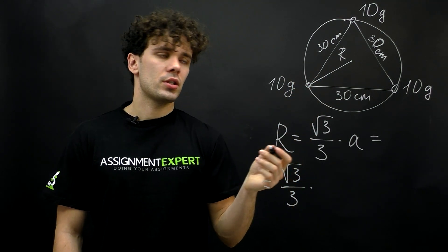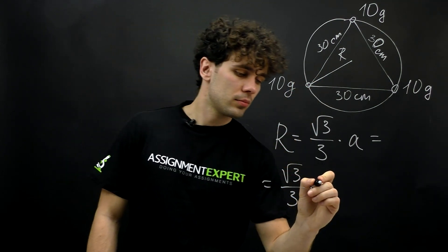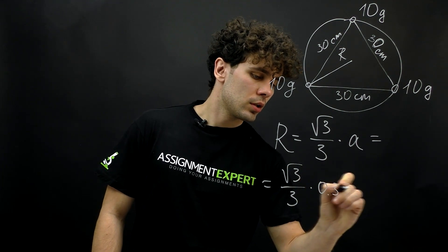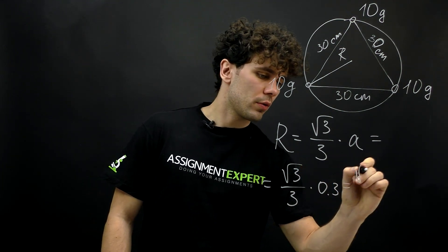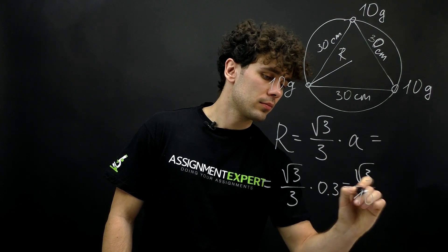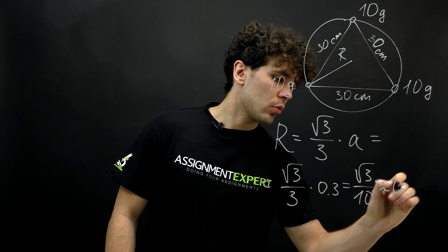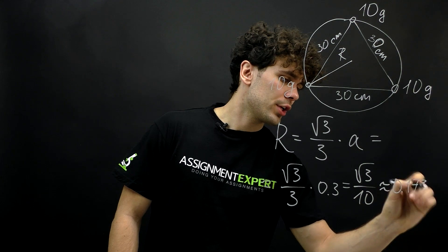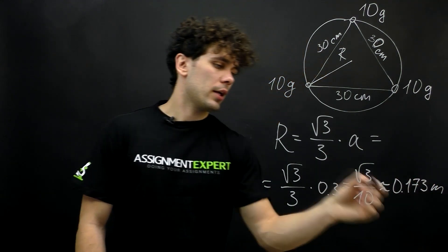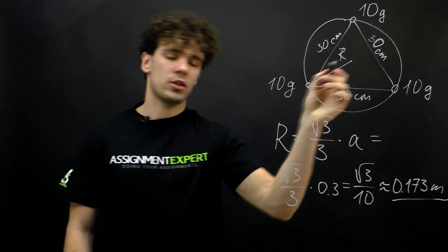And 30 centimeters is 0.3 meters. And we get the square root of 3 over 10, or approximately 0.173 meters. And that's the distance to the center of mass.